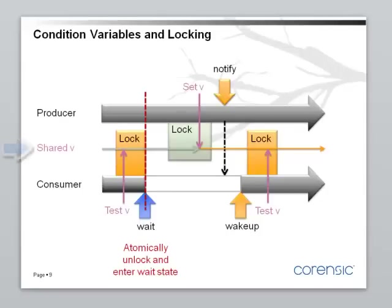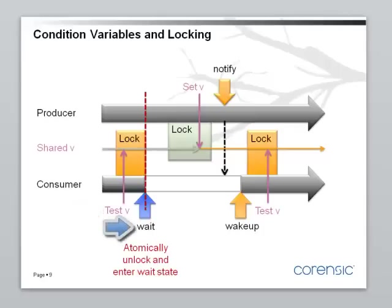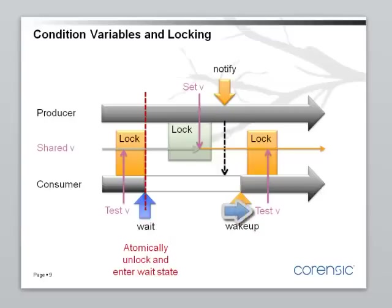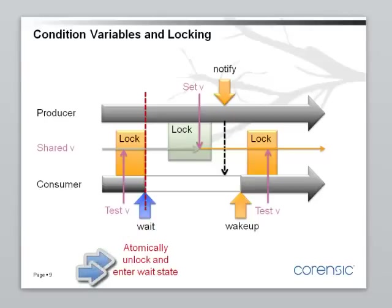Let me show this in a diagram. We have a producer, a consumer, and the shared variable in the middle. The consumer takes a lock on the shared variable, tests it, and if it's false, calls wait. The wait releases the lock and enters the wait state. Now the producer takes a lock, sets v, and sends a notification. At this point, the consumer wakes up, takes the lock, returns from wait, and then tests the variable v. If it's not set, it goes back and calls wait in a loop. The important thing is that unlock and enter-wait-state are done in one atomic operation.